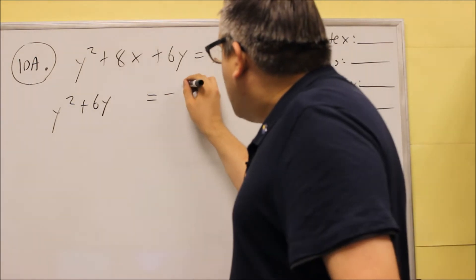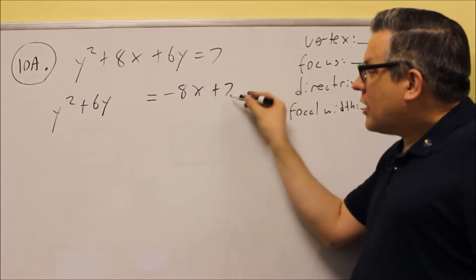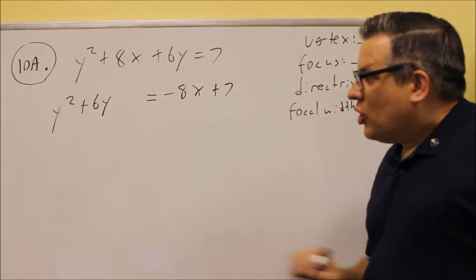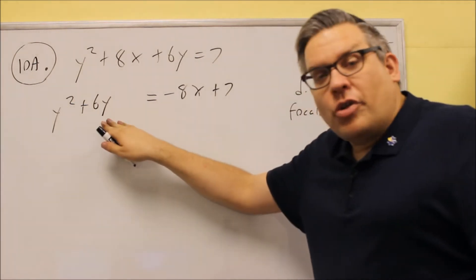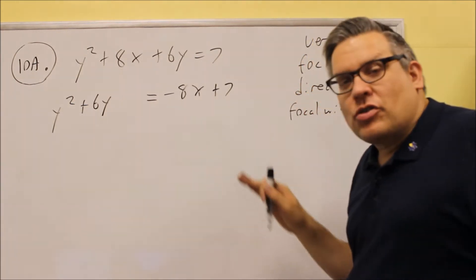And then I'm going to move the 8x across the equal sign, and I have 7 was already positive, so it's a plus 7 here. So I'm just grouping the y's together. Whatever ones you have, two of those, that's what you're going to do the complete the square steps with. Over here we don't have to do complete the square.